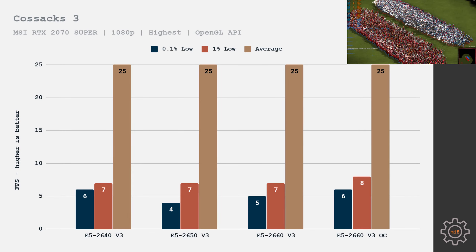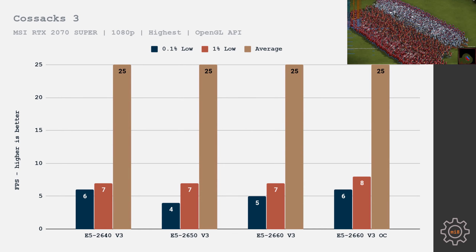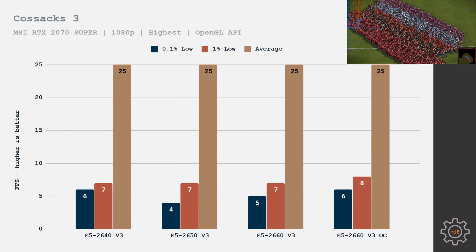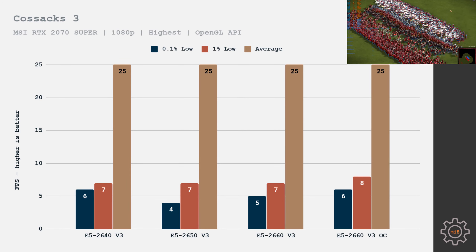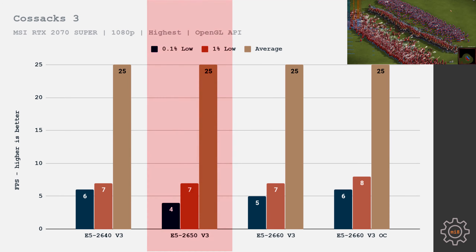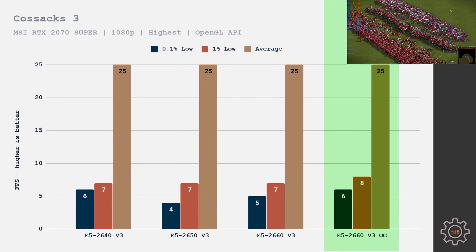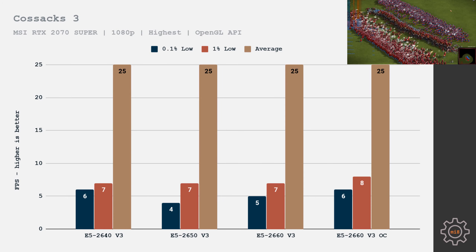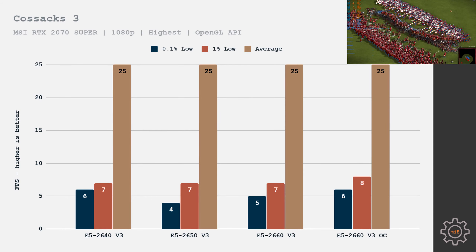COSX 3 uses a maximum of 1.5 CPU cores, so performance is almost identical across all CPUs. Nevertheless, the 2650 shows the worst result while the overclocked 2660 shows the best, though the difference is just a few fps.